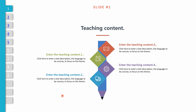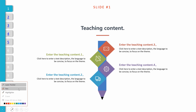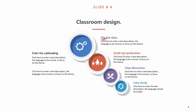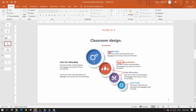The next feature PowerPoint offers is a pen. You can write over your presentation — this is a very handy tool when you want to add details to the slides on the fly. The best part is it just stays even after you are out of the presentation mode.